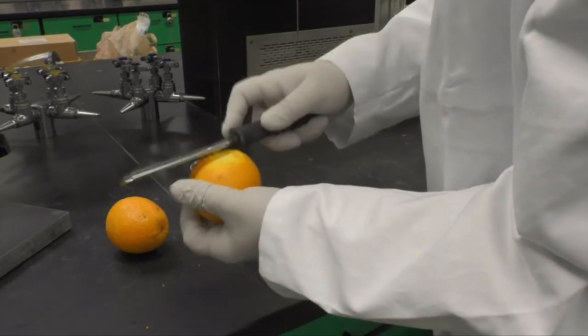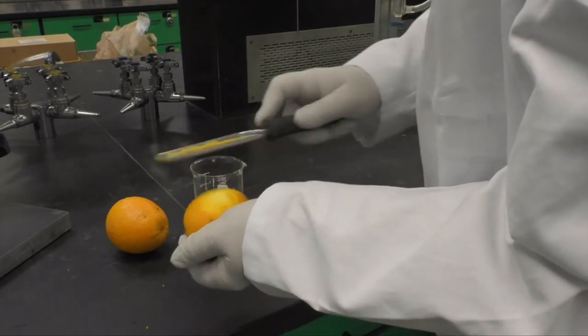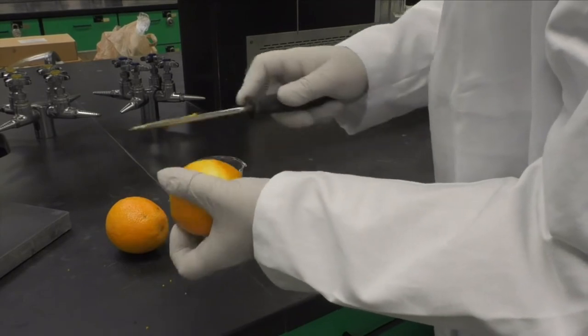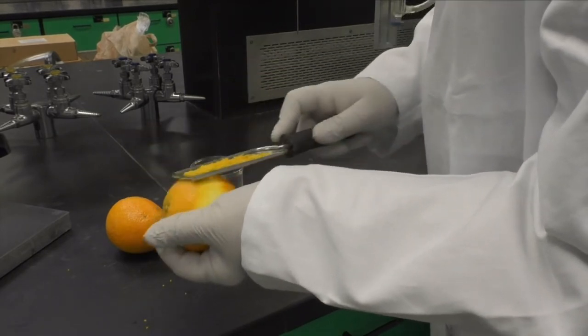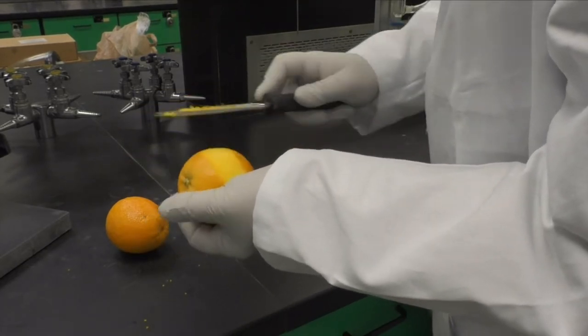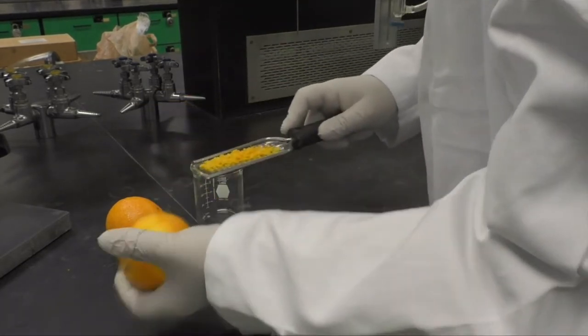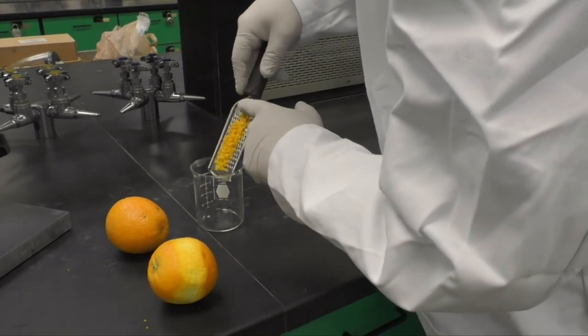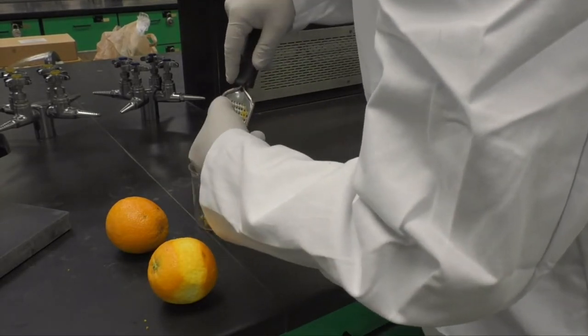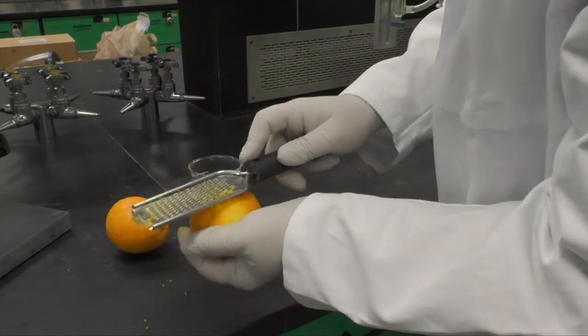Rub the zester across the orange so that just the colored part of the skin is removed. You'll need to constantly rotate the fruit. As the zest collects on the zester, occasionally wipe it from the zester into the beaker. Do not place it on a paper towel as that will soak up the oil that contains the limonene. Remove as much zest as you can.